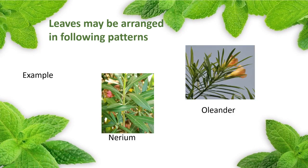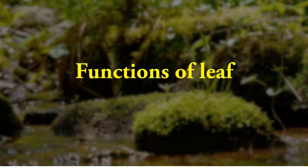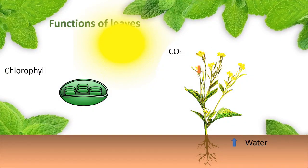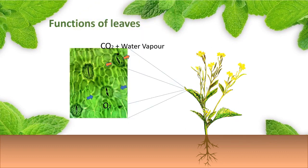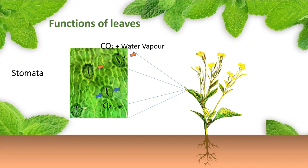Functions of a leaf — 1. The main function of a leaf is to synthesize food with the help of chlorophyll, carbon dioxide, and water in the presence of sunlight, by the process of photosynthesis. 2. The leaves perform gaseous exchange through small pores on their surface called stomata. 3. The excess water in the form of water vapor is removed from the leaf through stomata, and this process is called transpiration.